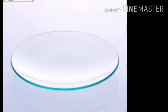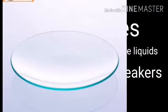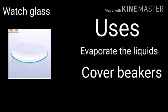Next, watch glass. Watch glass is made up of glass and is used like an evaporating dish for very small amounts of liquids. We can add some liquid to the watch glass and it will evaporate the liquid. It is also used to cover beakers. So watch glass has two uses: evaporating liquids and covering beakers.